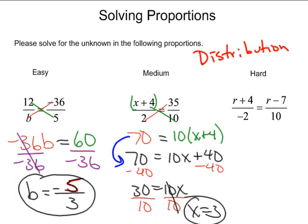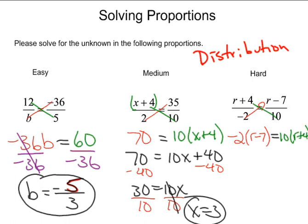Now here, we're going to cross-multiply. Notice that this cross-multiplication will prompt the need for distribution, as will this multiplication. This first one is going to be negative 2 times the quantity r minus 7, and that's going to be equal to 10 times the quantity r plus 4. It's very important to set that up before actually trying to distribute, especially when there are negative signs around — it's very easy to make a sign mistake.